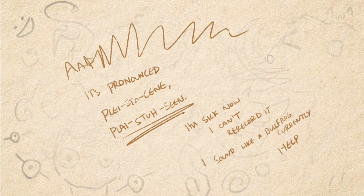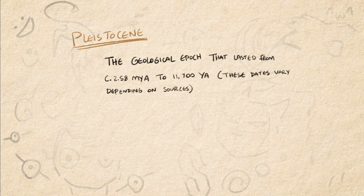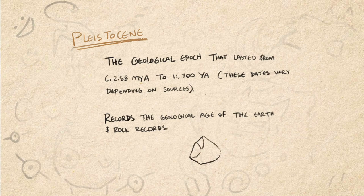The Pleistocene Epoch is an unofficial geological time period that records the rock record of the earth — specifically the time frame wherein we had glacial and interglacial cycles — and lasted from 2.6 million years ago to 11,700 years ago. It is divided into four ages: the Gelasian, Calabrian, Chibanian, and the late Pleistocene.